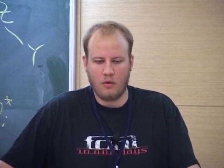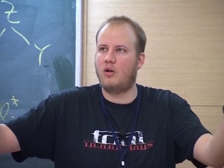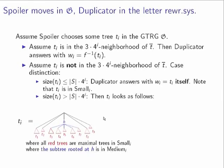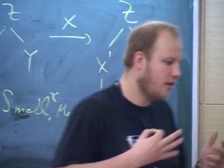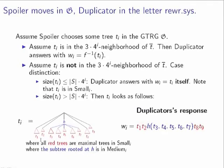In this way, we showed that you can reduce the model checking problem for ground tree rewrite systems to a two-fold exponentially larger letter rewrite system. Let me now come to the lower bound.